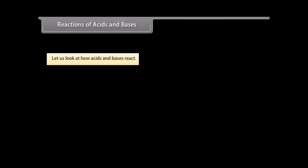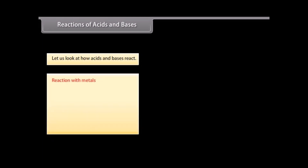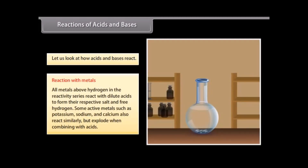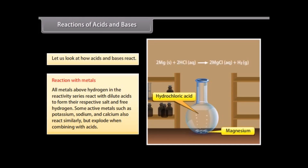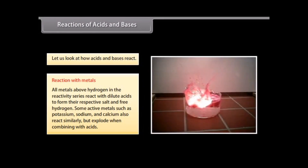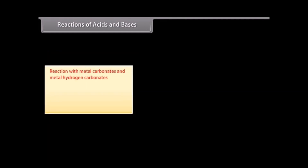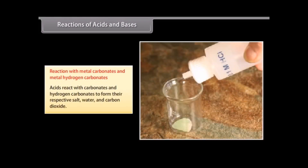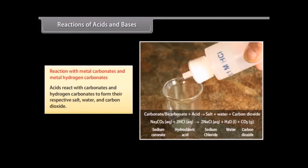Let us look at the different reactions of acids and bases with metals, metal carbonates, and metal hydrogen carbonates, and with each other. Reaction with metals: all metals above hydrogen in the reactivity series react with dilute acids to form their respective salt and free hydrogen. Active metals such as potassium, sodium, and calcium also react similarly, but explode when combining with acids. Acids react with carbonates and hydrogen carbonates to form their respective salt, water, and carbon dioxide.